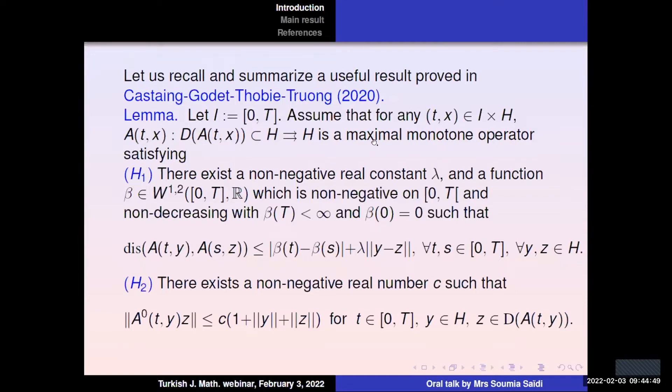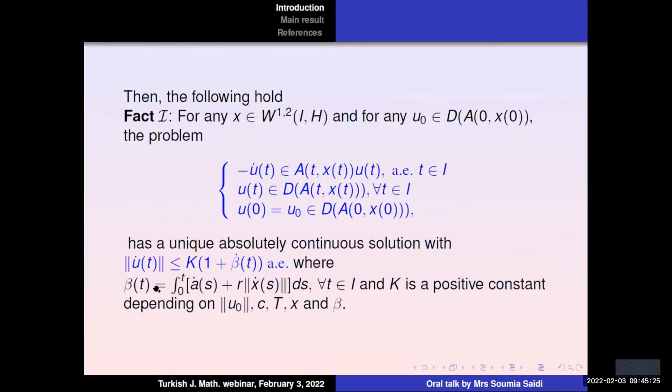If we consider a time and state-dependent maximal monotone operator that satisfies the condition H_1 that involves the pseudo-distance between maximal monotone operators, we say that the operator varies in an absolutely continuous way in time and in a Lipschitz continuous way with respect to the state. In this condition we consider an estimate involving the elements of minimum norm. Then for any x_0 in the space W^{1,2}, there is a unique absolutely continuous solution to the first order differential inclusion governed by time and state-dependent maximal monotone operator with initial condition in the domain of the operator, such that the velocity satisfies these estimates, where beta dot, of course, is in L^2. That is, it is square integrable.